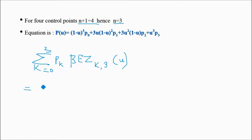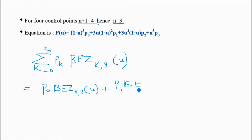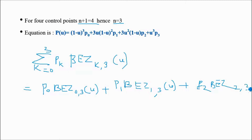We will put in the k values: p(0) times Bezier(0,3)(u) plus p(1) times Bezier(1,3)(u) plus p(2) times Bezier(2,3)(u) plus p(3) times Bezier(3,3)(u).